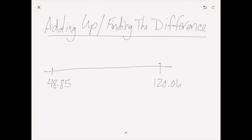Another way kids solve this is adding up — instead of shifting numbers, they keep the numbers the same on the number line and count up from $48.85 to $120.06. Most people add up rather than subtract down, so you'll see kids start with 15 cents because that gets them to the next dollar, then add $1 to get to $50.